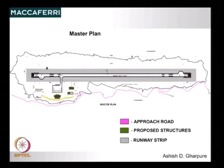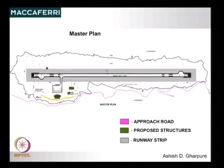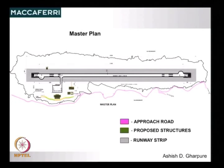The master plan consisted of a runway strip, the terminal building, and allied structures. There is also an approach road which had to be maintained as it provides access to all the area. The proposed boundaries of the structure follow the contours, hence the boundary was very irregular. The runway strip runs all across.